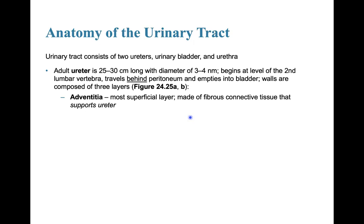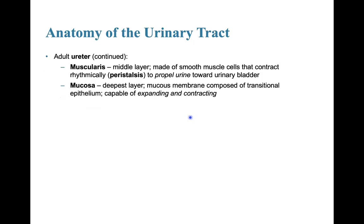The walls of the ureter are composed of three layers. The adventitia is the most superficial layer, made of fibrous connective tissue that supports the ureter. The muscularis is the middle layer, made up of smooth muscle cells that contract rhythmically in a peristaltic motion to propel urine towards the urinary bladder. The mucosal layer is the deepest layer, a mucous membrane composed of transitional epithelium, which allows for contraction and expansion of the vessel.